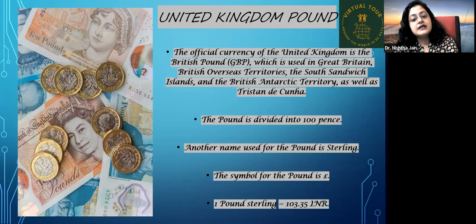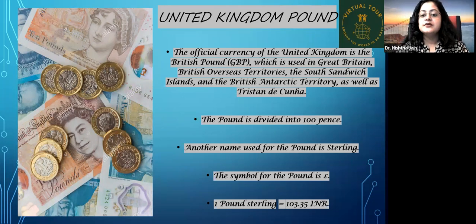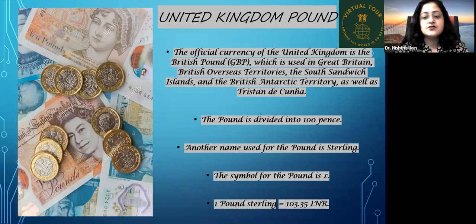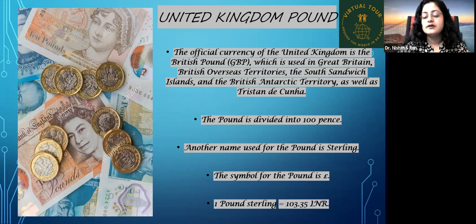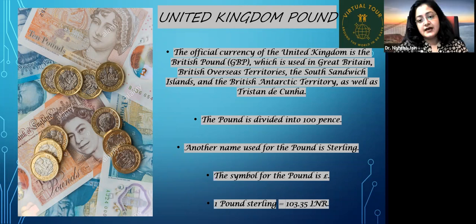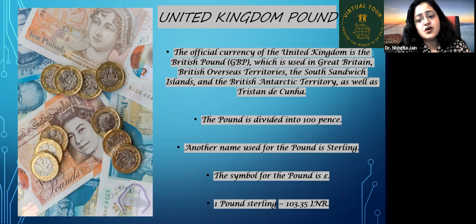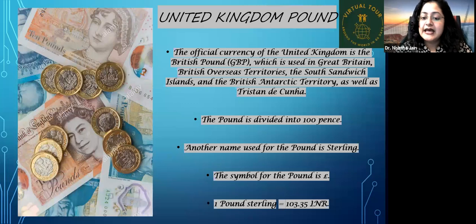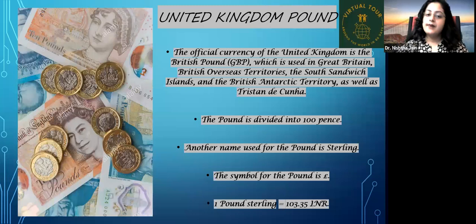The pound is used in Great Britain, British overseas territories, the South Sandwich Islands, and the British Antarctic Territory. A student asked about the British Antarctic Territory, which does extend all the way to Antarctica. The pound is divided into 100 pence, so one pound equals 100 pence. Another name used for the pound is sterling.